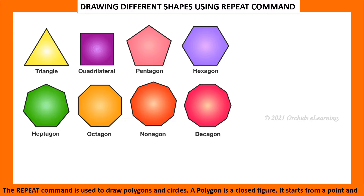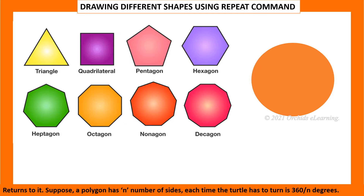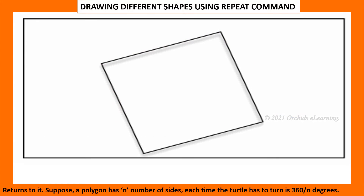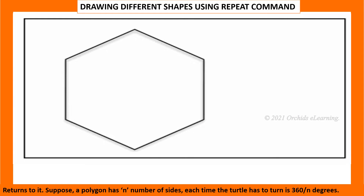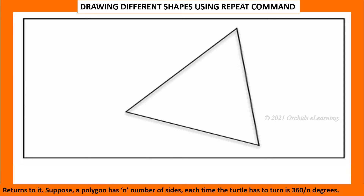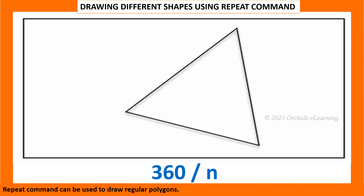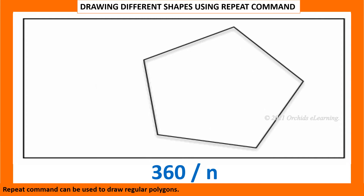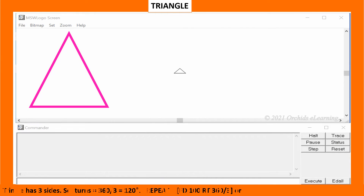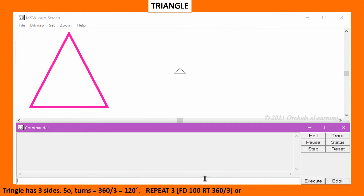The repeat command is used to draw polygons and circles. A polygon is a closed figure — it starts from a point and returns to it. Suppose a polygon has n number of sides; each time the turtle has to turn is 360 divided by n degrees. The repeat command can be used to draw regular polygons. Let us draw regular polygons using the repeat command now.